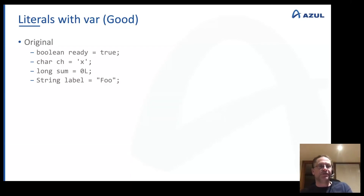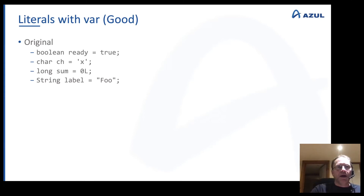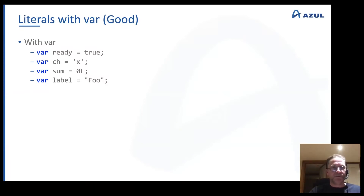There are safe uses of literals with var. If you have 'boolean ready = true', 'char ch = 'x'', 'long sum = 0L', and 'String label = "foo"', you can replace all of those with var and have no problem. The compiler will infer from true, 'x', 0L, and the quoted string that these are unambiguous types — boolean, char, long, and String respectively.